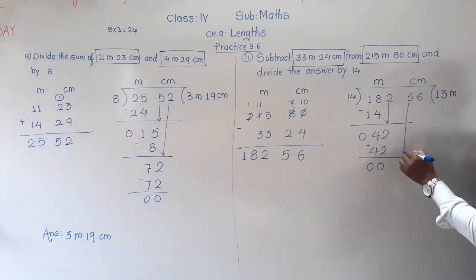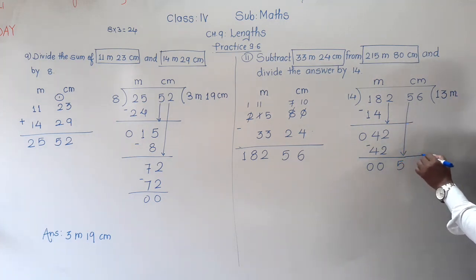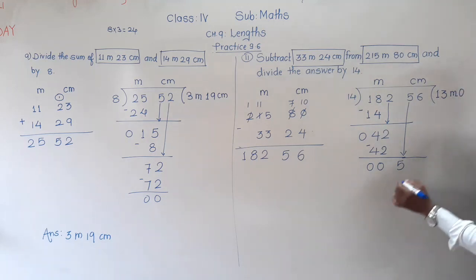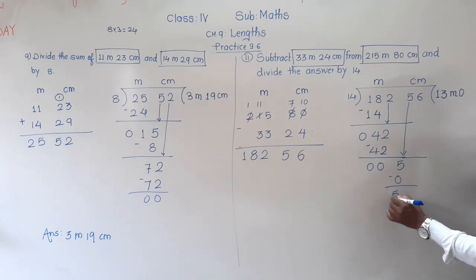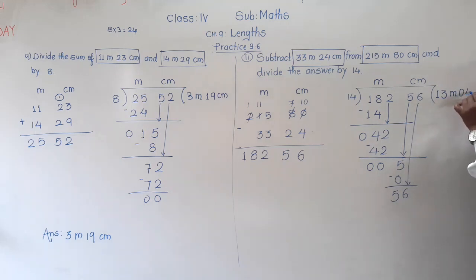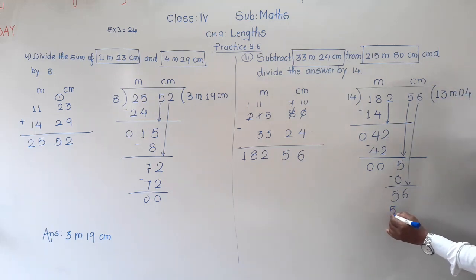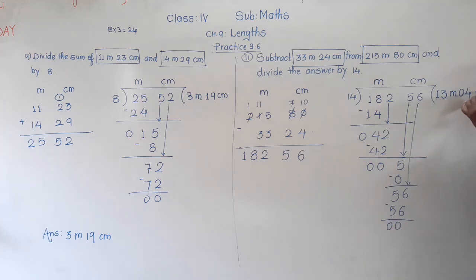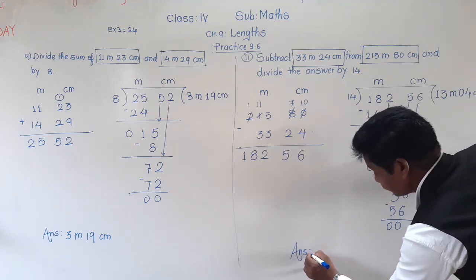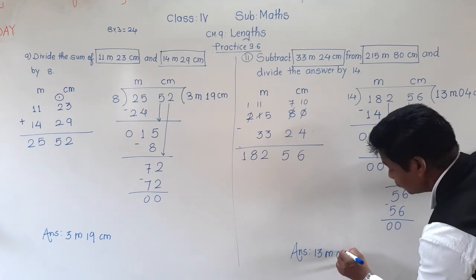Now bring 5 down from the centimeter column — we bring single digits only. We have to divide 5 by 14, but 5 is smaller, so 14 zeros are 0, and 5 minus 0 is 5. Bring 6 down: it becomes 56. Is 56 in the table of 14? Yes — 14 fours are 56. So the answer is 13 meter 4 centimeter.